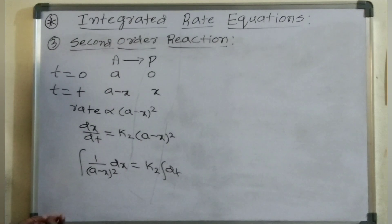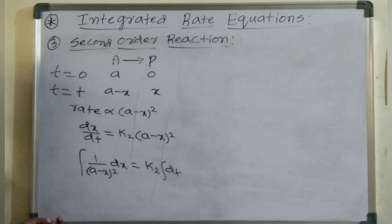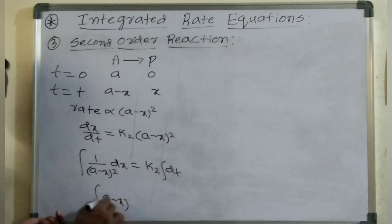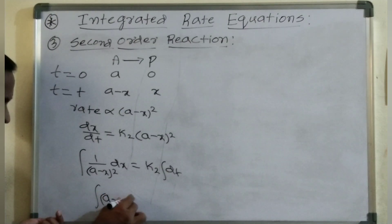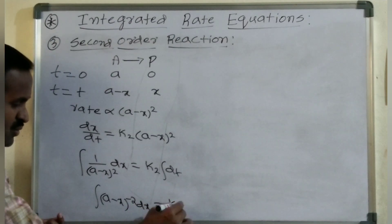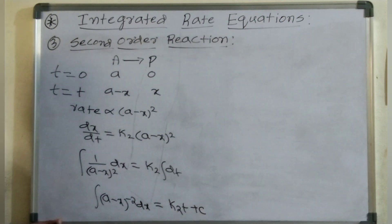Integration of 1 by (A minus X) whole power 2 can be written as integration of (A minus X) whole power minus 2. This equals K2 into integration of dT plus constant C.